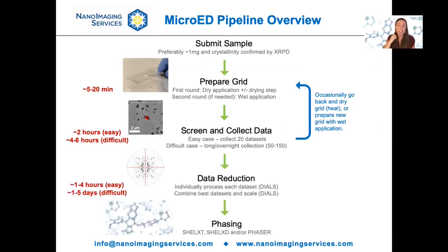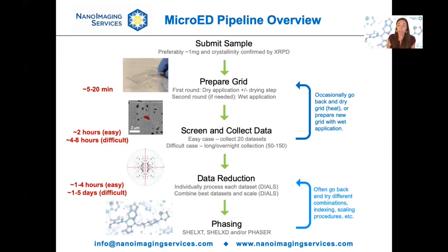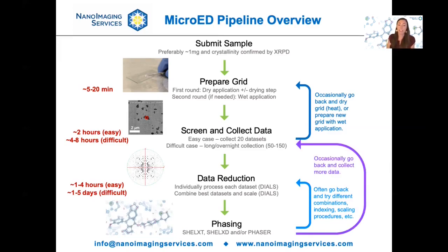The next step is data processing, broken into data reduction and phasing steps. In easy cases, we can typically solve the structure within an hour or two of data collection. For more challenging cases, it might take a couple of days. This process is very iterative — we often go back to the data reduction stage and try different combinations of data from different crystals, different indexing strategies, different scaling procedures, and occasionally collect additional data.